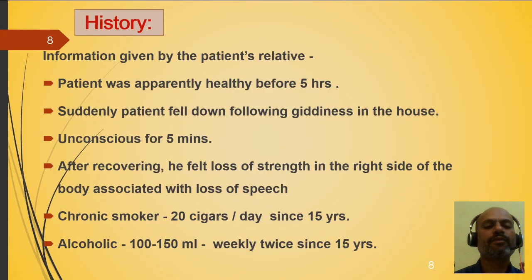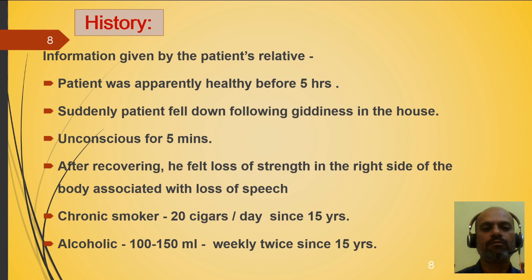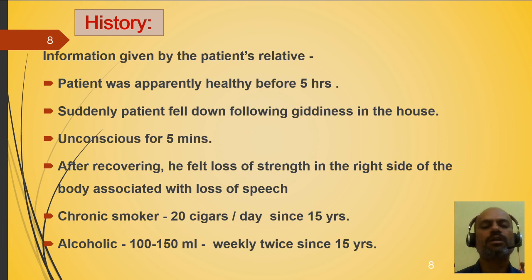History: Information given by the patient's relative was that the patient was apparently healthy before 5 hours. Suddenly the patient fell down following giddiness in the house, was unconscious for 5 minutes. After recovering, he felt loss of strength in the right side of the body associated with loss of speech. He was a chronic smoker — 20 cigars per day since 15 years — and alcoholic, consuming 100 to 150 ml weekly twice since 15 years.